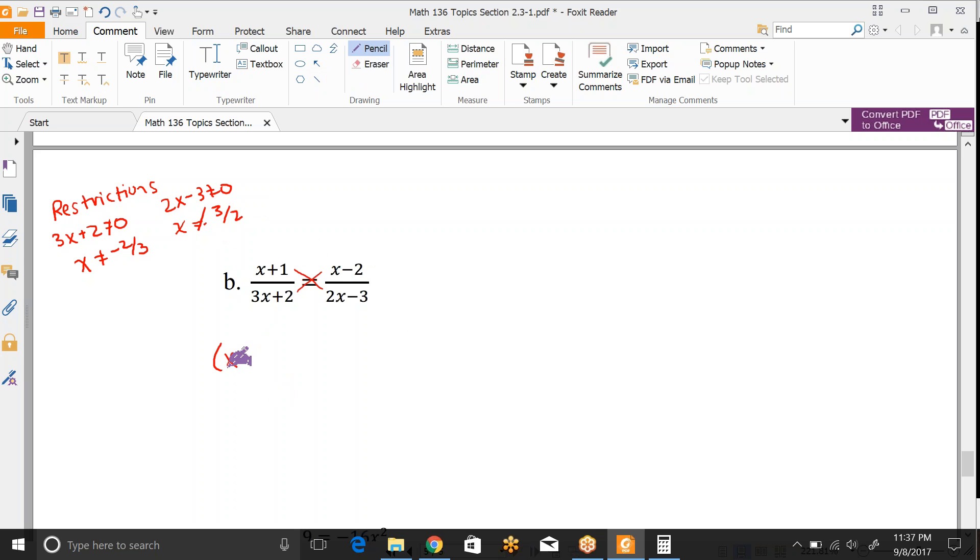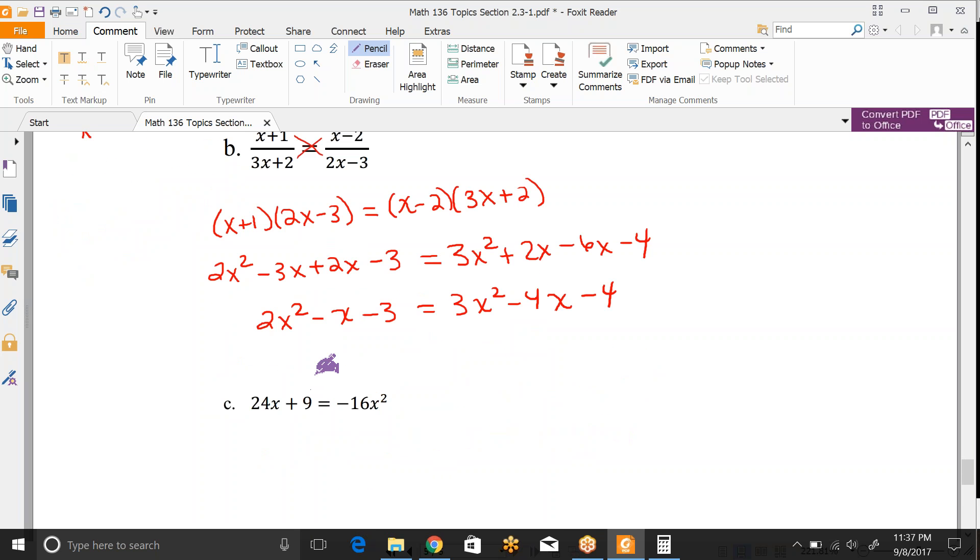If we cross multiply this would be (x + 1)(2x - 3) = (x - 2)(3x + 2). If we distribute or FOIL this would be 2x² - 3x + 2x - 3 = 3x² + 2x - 6x - 4. Combining like terms we get negative x in the middle on this side and negative 4x on this side in the middle. I would move everything over to the right this time because we want to keep our x² positive. So we're going to subtract over 2x² so that will be just x². We're going to add this x over so that will be negative 3x and we're going to add the 3 over so that's negative 1.